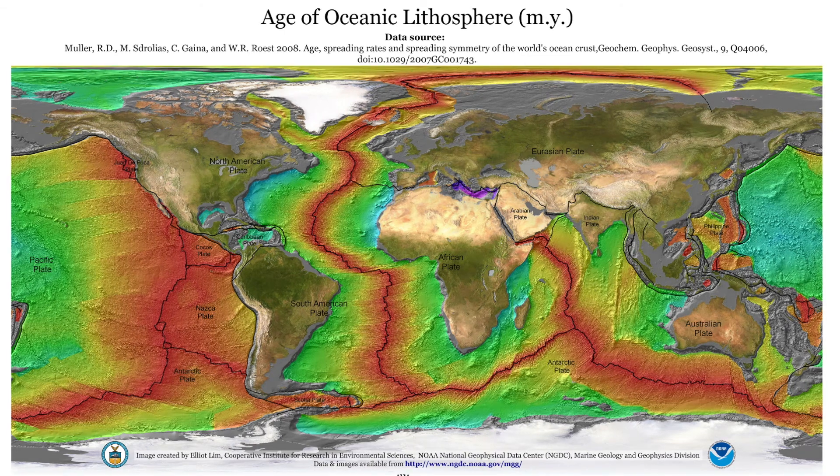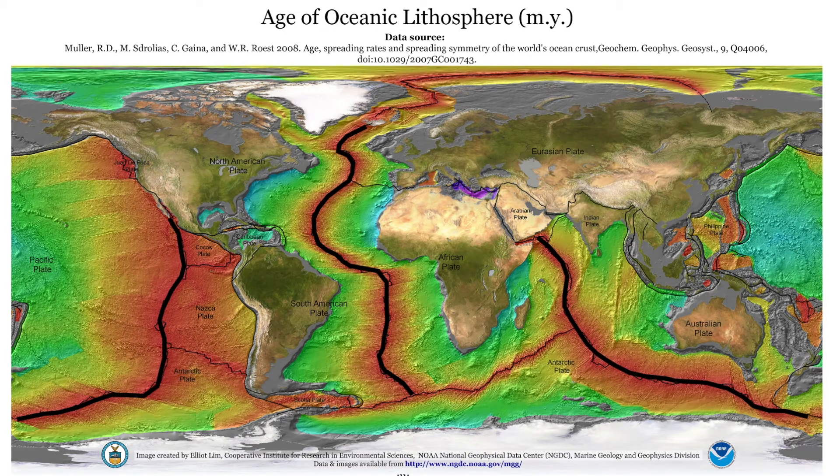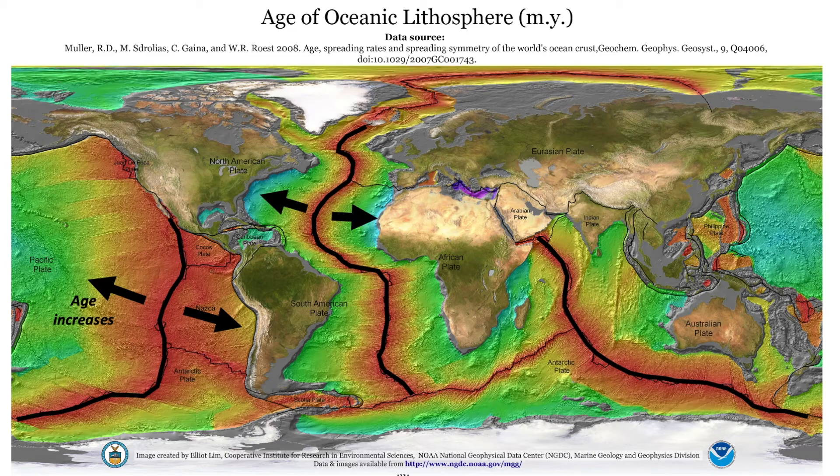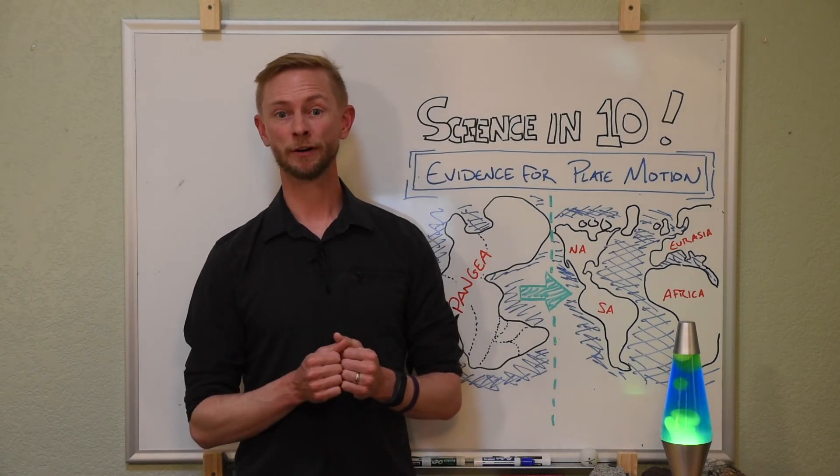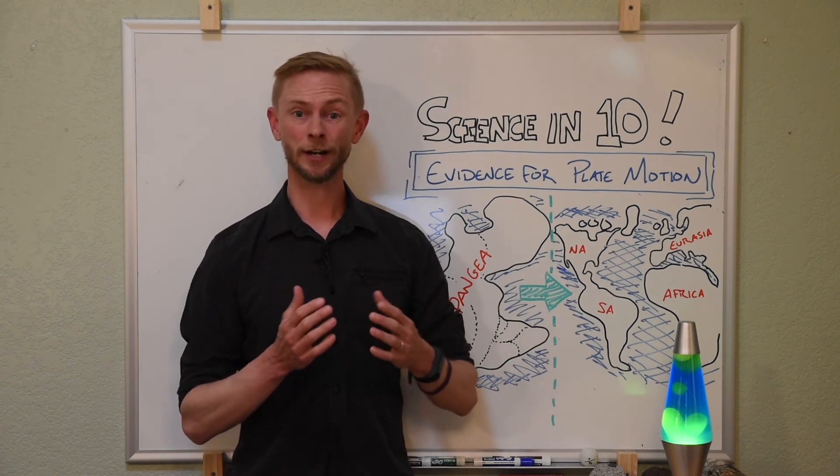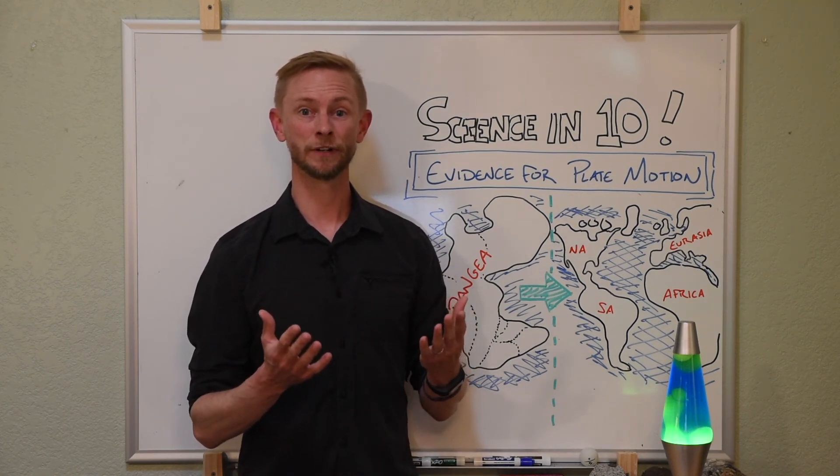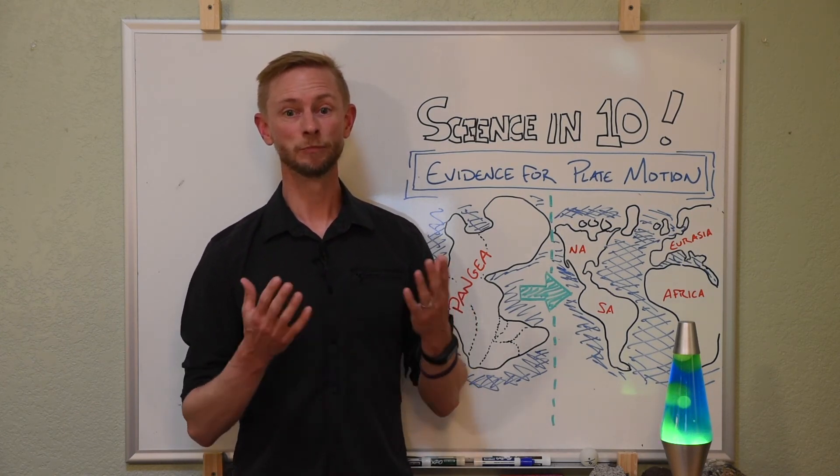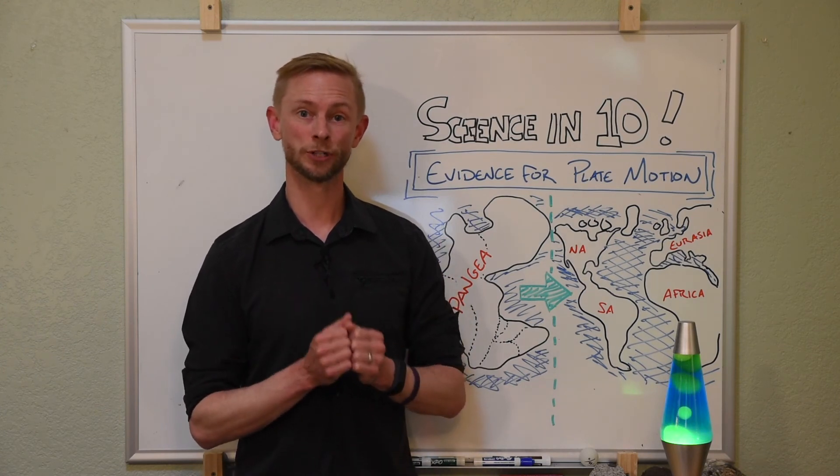At every single mid-ocean ridge, the crust is the youngest, and it gets older and older the further away from the ridge that you get. The only way for this pattern to form is if the oceanic crust, and hence the lithosphere it is a part of, is moving away from the mid-ocean ridges.